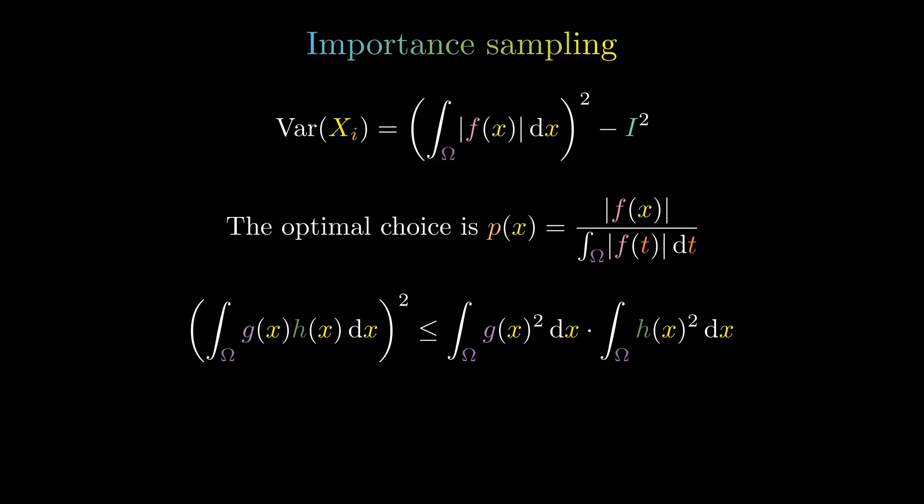For this, we will apply the Cauchy-Schwartz inequality for integrals to these two functions, as G, defined as absolute value of F divided by the square root of P and H, defined as the square root of P. First, substitute G and H.